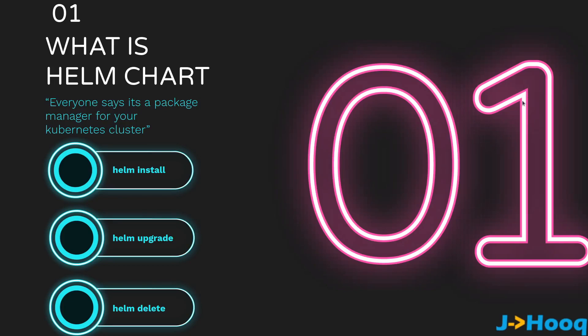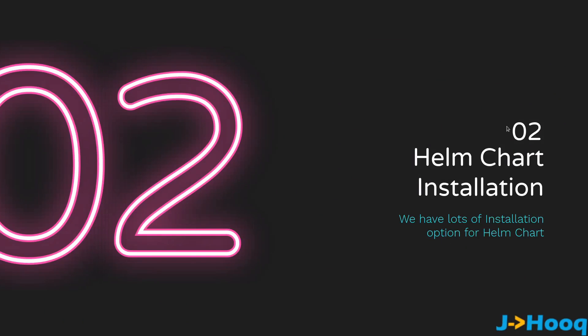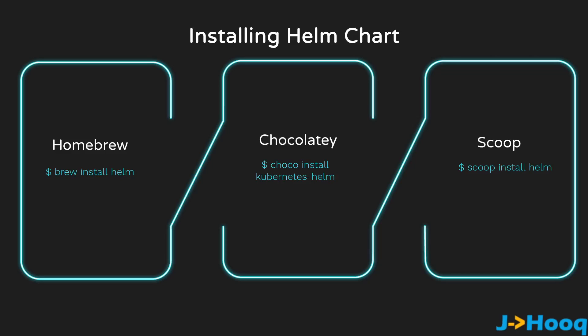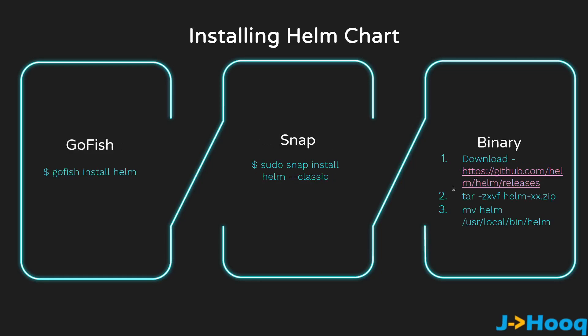In Part 2 we are going to see how we can install Helm Chart. There are lots of installation options: there is Homebrew, there is Chocolatey, there is Scoop — these are one-line commands for installing Helm. There is also Go Fish and Snap. If you don't want to use any of these package managers, you can choose the binary option, where you download it from GitHub, unzip it, and move it to /usr/local/bin/helm.